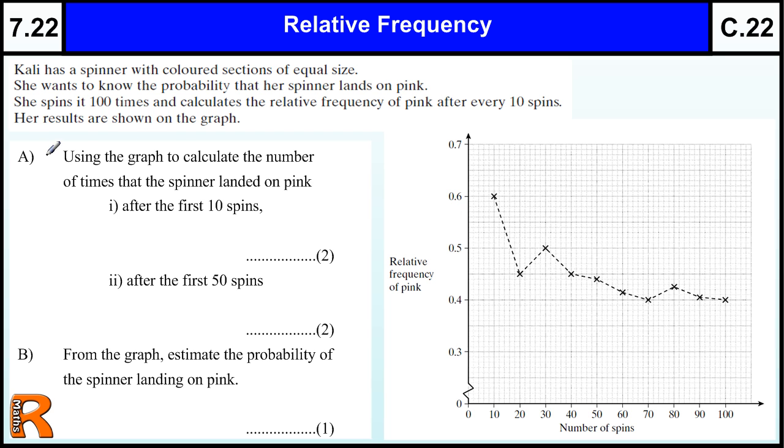So, using this, we can answer questions about the probability. Using the graph to calculate the number of times that the spinner landed on the pink after the first 10 spins. So, 10, 0.6 of the time it landed on pink. So, 0.6 times 10 is 6 times. After the first 50 spins, 50 spins it's here, which is 0.44 and we're going to times that by 50. So, if we times by 100, we get 44 and then we half it, we get 22.